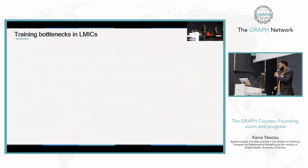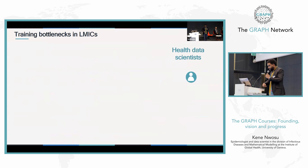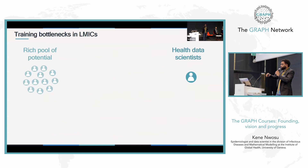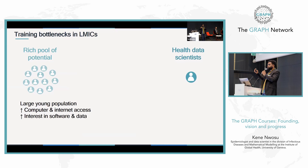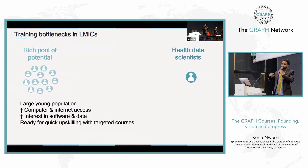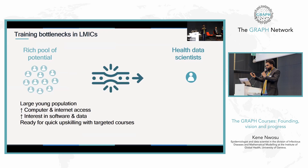So why are we building the Graph Courses? In our work with WHO AFRO, and as you've heard from Benito, there is in many cases a scarcity — a dearth — of programmatically trained health data scientists in many low- and middle-income countries. But we also observed that there's a large, rich pool of potential analysts. Many of these countries have large young populations, increasing access to computers and internet, and increasing interest in software and data. This is a population that's ready for quick upskilling with targeted courses — not necessarily traditional master's degrees, but targeted courses that really hone in on the required skill sets. However, there are still bottlenecks preventing these potential analysts from upskilling to become efficient health data scientists.